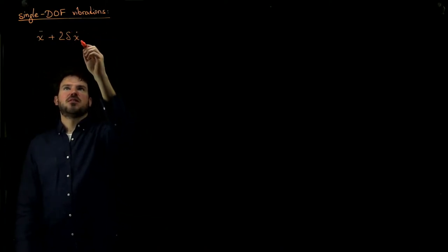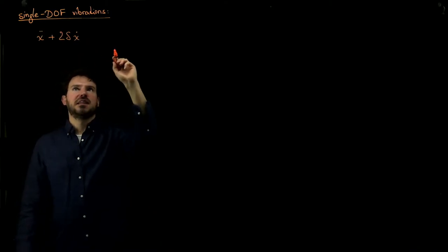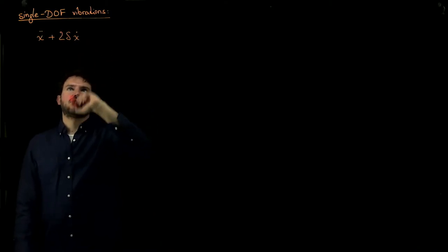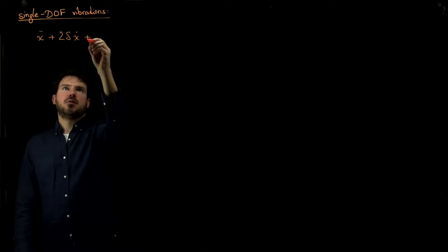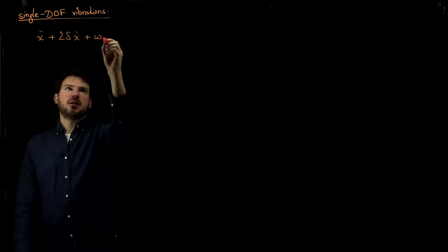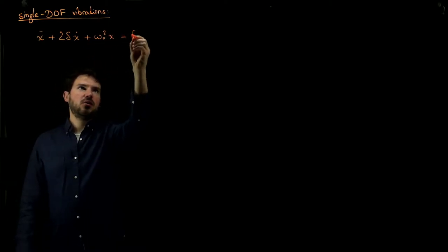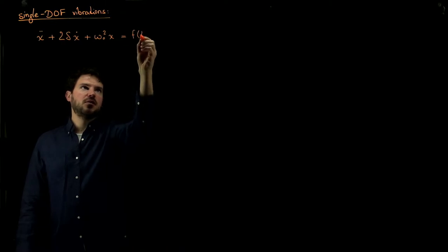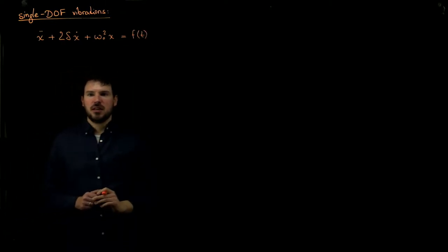it's a ratio of damping over frequency. Then x dot plus omega_0 squared times x, and now we included the right-hand side of some forcing function f of t.